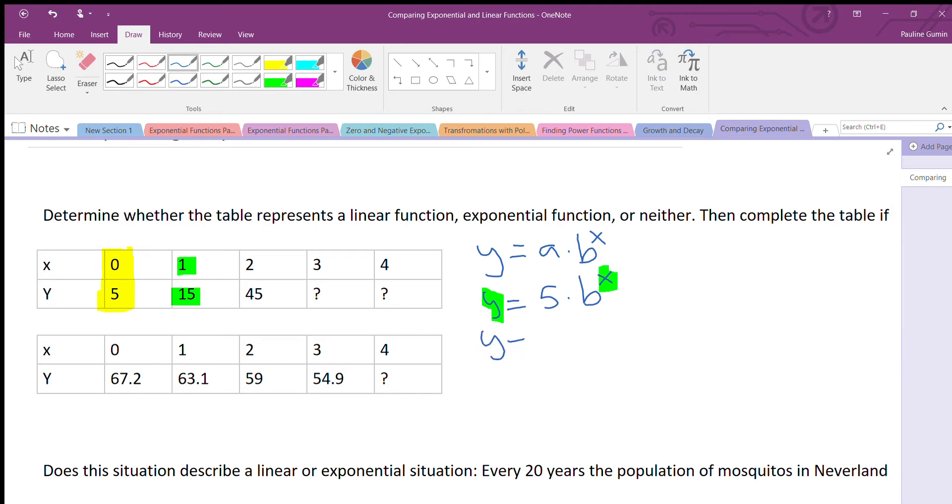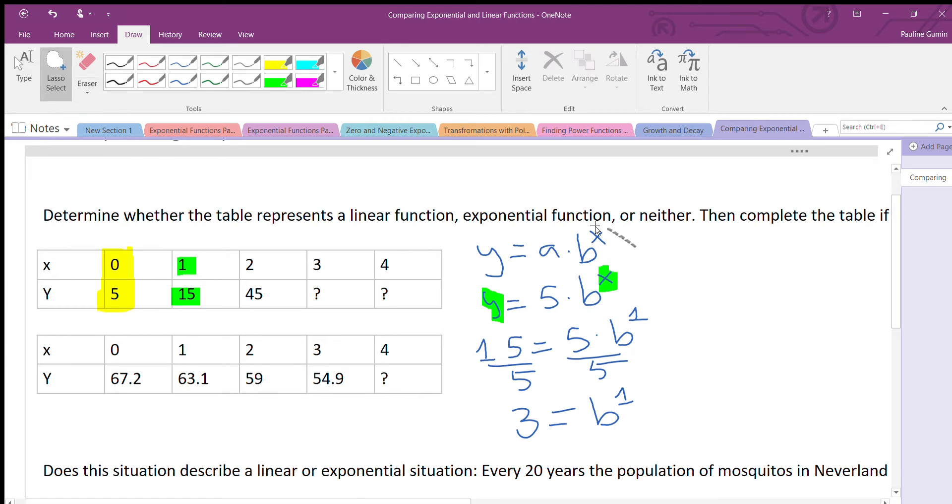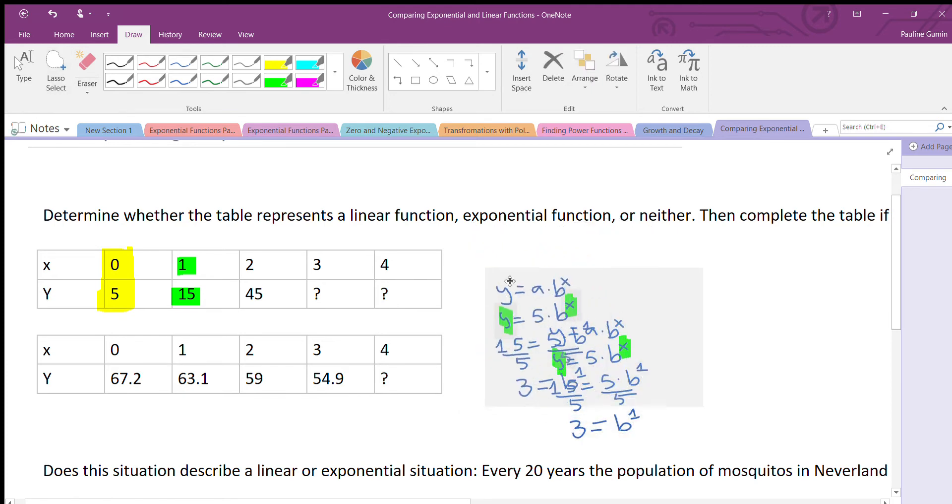15 equals 5 times b to the power of 1. So if this was a normal equation, well, I guess it kind of is a normal equation. I have multiplication. I'm going to divide to see what b to the power of 1 should be. So 15 divided by 5 is 3 is b to the power of 1. Can you think of a number that if I raise to the power of 1 gives me 3? Oh yeah, 3. So b is 3. Perfect. I am going to make this smaller before we continue. Wish me luck. I did it. No, I didn't. I'm going to try one more time before I give up. Thanks for bearing with me.